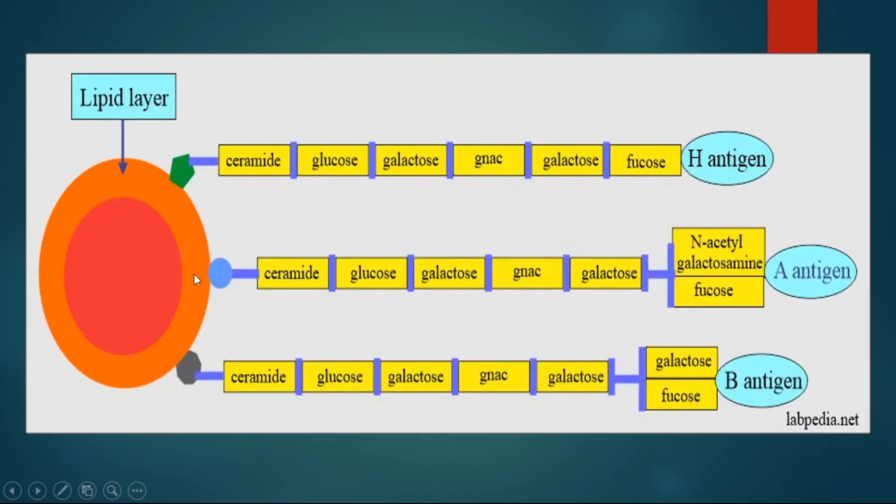This is the lipid bilayer of RBC. This is a carbohydrate molecule that will be converted into the H antigen with the fucosylation of this gel structure by the enzyme called fucosyltransferase. So ultimately, the enzyme that is responsible for the biosynthesis of this H antigen is called fucosyltransferase.